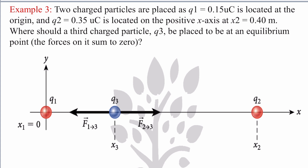Now question number two — example number three from your book. This is a very easy question. Two charged particles are placed: q1 is located at the origin, q2 = 0.35 microcoulombs is located on the positive x-axis at x = 0.4 meters. Where should the third charge q3 be placed to be in equilibrium? Equilibrium means both forces sum to zero: F_13 = F_23.